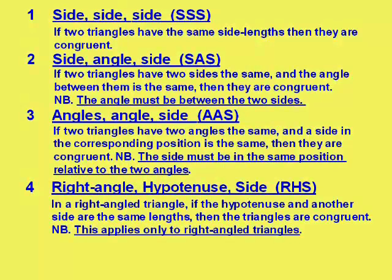And right angle, hypotenuse, side only works for right-angled triangles. But if you can show that the hypotenuse and the side of two right-angled triangles are the same, then they're congruent. But this rule only applies to right-angled triangles.